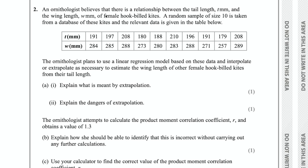Question 2 says an ornithologist believes there is a relationship between the tail length T millimetres and the wing length W millimetres of female hook-billed kites. A random sample of size 10 is taken from a database of these kites and the relevant data is given in the table. The ornithologist plans to use a linear regression model to interpolate or extrapolate to estimate the wing length from the tail length. Part A, part 1 says explain what is meant by extrapolation.